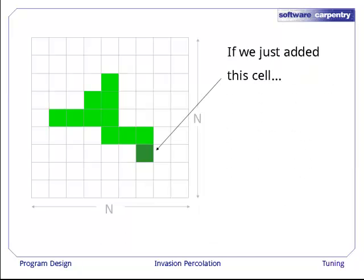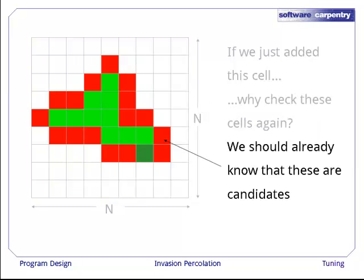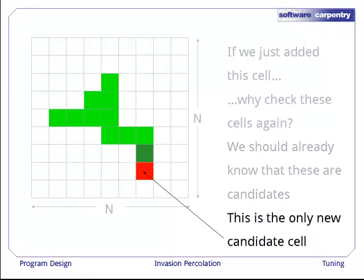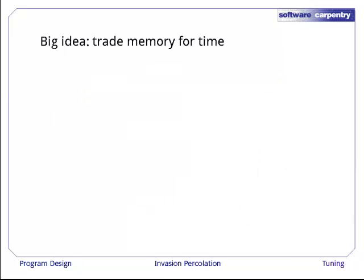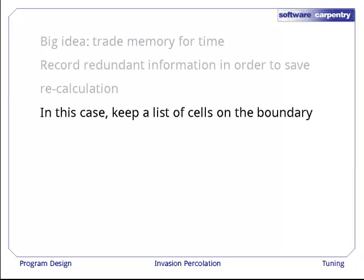We need to find a way to attack that exponent. Well, here's another thought. If we've just added the cells shown in dark green, why are we bothering to check all of the cells shown in yellow? We already know that the cells shown in red are candidates because they're adjacent to cells that we've already checked. We've only got one new candidate cell to add to that set. And this leads us to one of the big ideas in programming. You can trade memory for time and vice versa, i.e., you can record redundant information in order to save recalculation as a way of making algorithms faster.